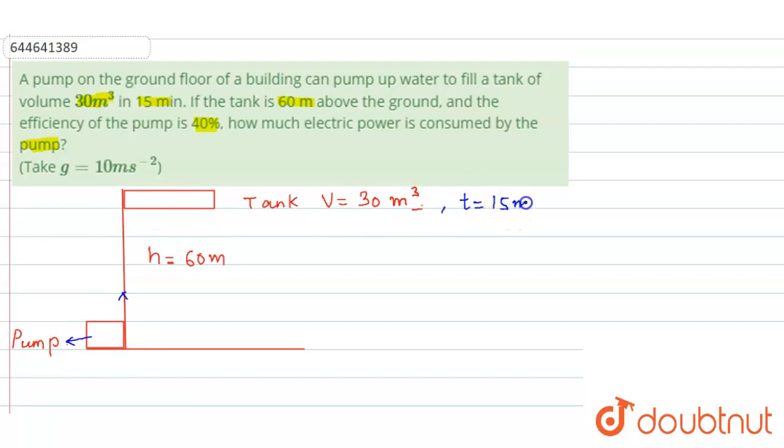Now first let us try to find out what is the total mass of the water that will be filled in the tank. So the total mass of the water is simply equal to density of the water times the volume of the water. In 15 minutes, the volume of water filled in the tank is 30 meter cube. The density of water is normally 1000 kg per meter cube. So we get the mass is 30 into 10 raised to the power 4 kg. This is the mass of water being filled in this tank.